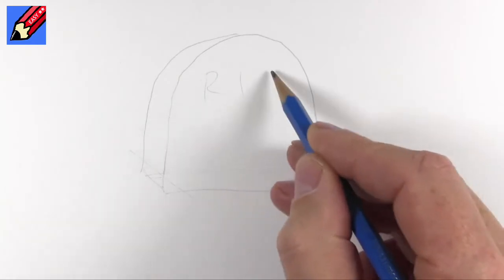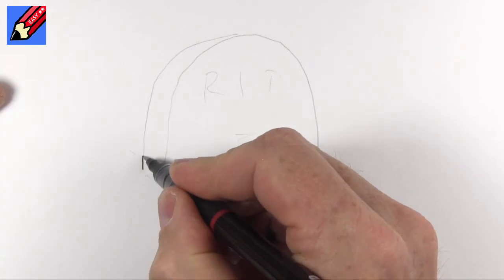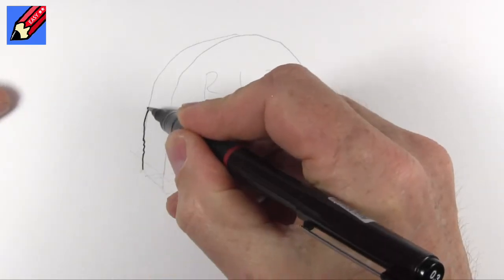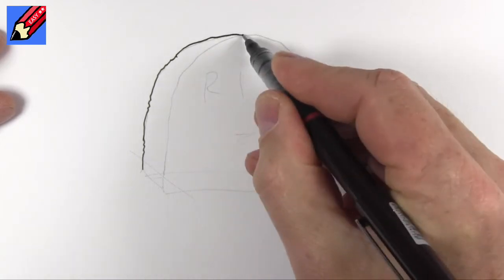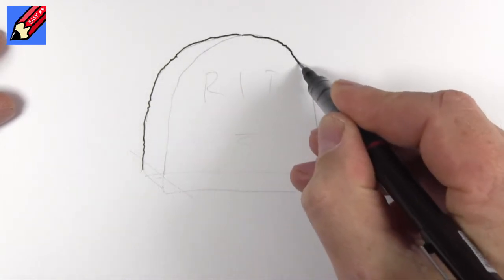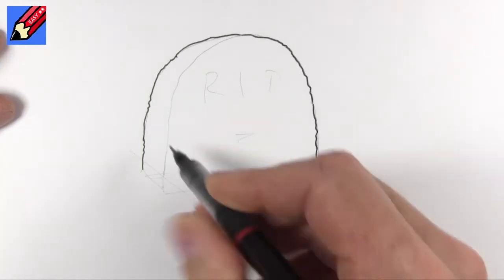We're going to want R.I.P roughly about there. So we want to get a kind of stone finish to this so you can make that slightly crinkly, go all the way around with a little bit of crinkliness to the line as you're drawing it.